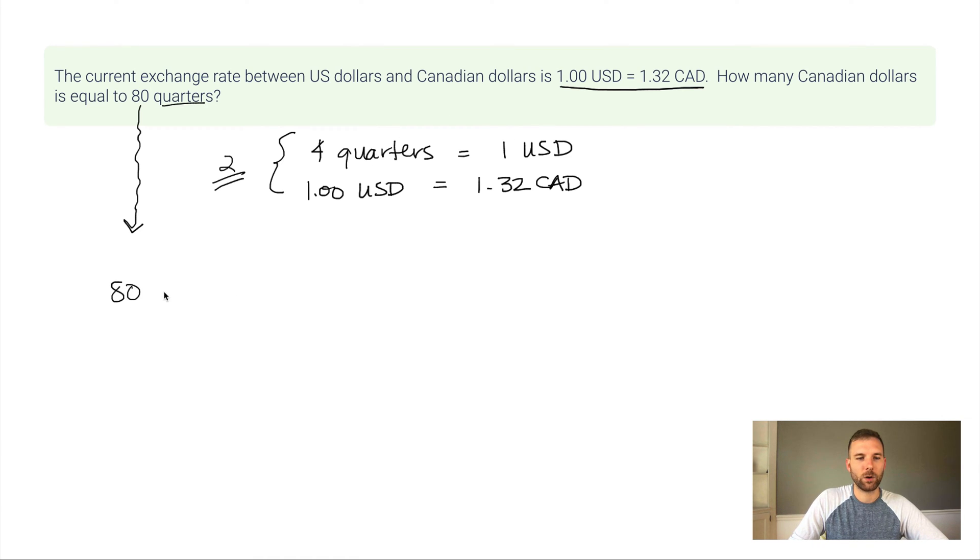So I start by writing 80 quarters. It's really important that you put the factor with the label, hence the name factor-label method. Some people like to put this over one. If that's you, go for it. And then you want to multiply by a fraction. This fraction is one of our conversion factors. The first one is always the easiest to figure out. See how I have quarters here? I want to get rid of quarters. And the only way to do that is to put quarters on the bottom.